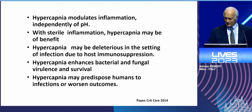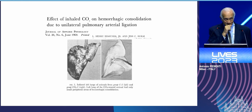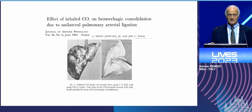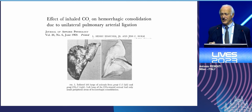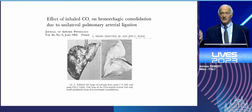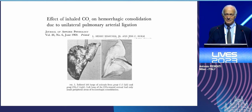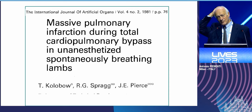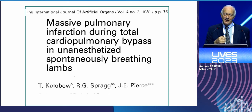This is a very old paper from the late 1960s — an experiment in dogs. By tying off the left pulmonary artery, the left lung becomes hemorrhagic if we keep ventilating it. If we add 5% CO2 to the inhaled gas, the lung is protected and does not get hemorrhagic. This is from the laboratory of Ted Kolobov at NIH, published in 1981.